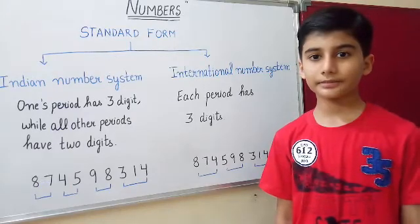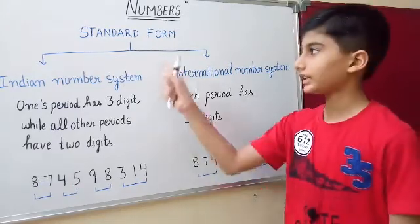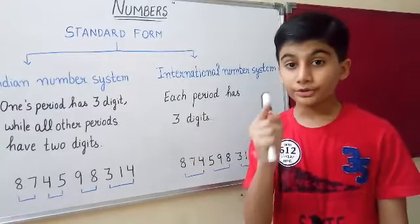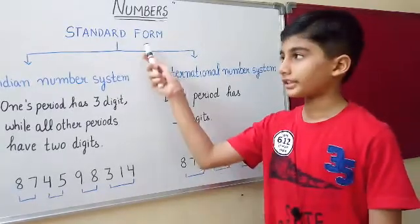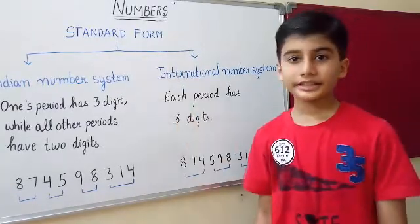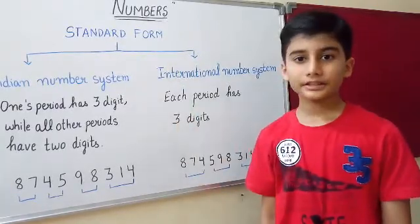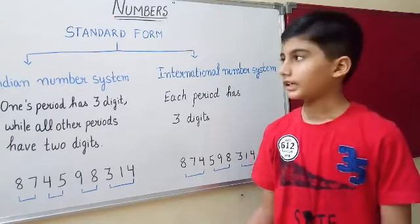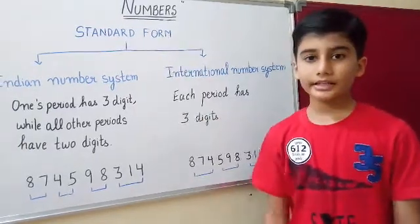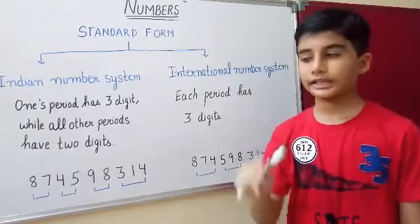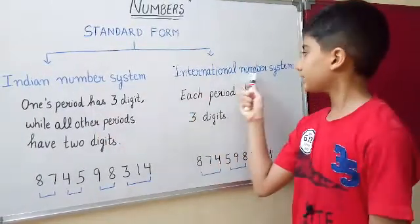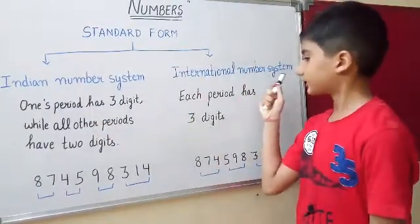The next way to write a number is standard form. Standard form is written as digits separated with commas. Standard form is divided into two categories: the Indian number system and the international number system.